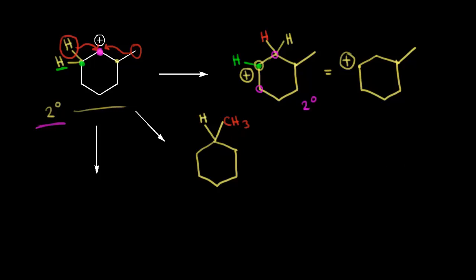We're taking a bond away from the carbon in blue, which is losing that CH3. There was a hydrogen on that carbon originally, so it's still there. Taking a bond away from the carbon in blue means it now has a plus one formal charge. This is still a secondary carbocation — the carbon in blue was directly bonded to two other carbons — which again is not an improvement upon our original carbocation.